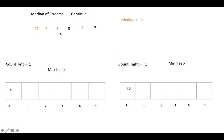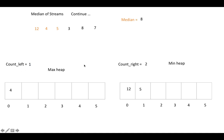The next element is 5. Here's the trick: in a min heap, the root element is always less than all its children; in a max heap, the root is always greater. So we compare 5 with the root of the max heap, which is 4. Since 5 is greater than 4, we store it into the min heap.